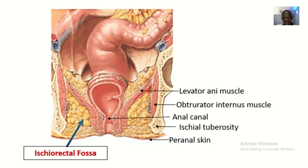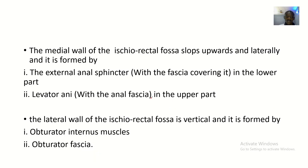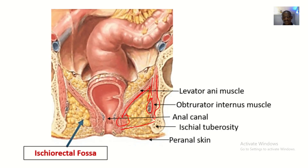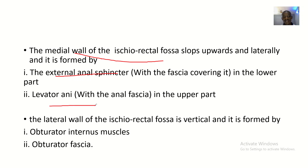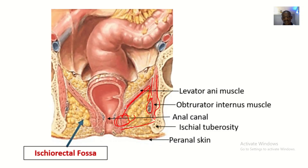The medial wall of the ischio-rectal fossa slopes upward and laterally. It is formed by the external anal sphincter in its lower part and the levator ani muscle in its upper part. These structures extend upward and laterally.